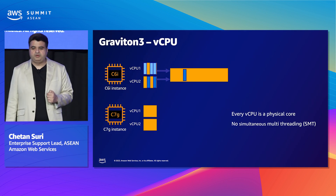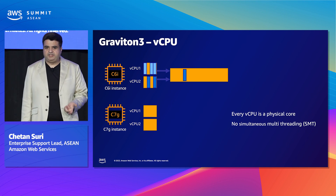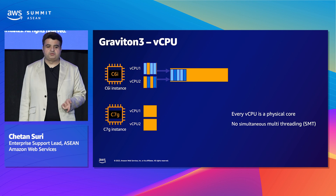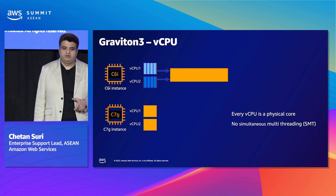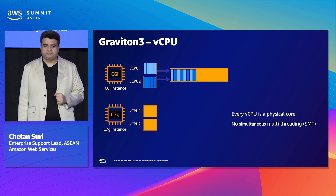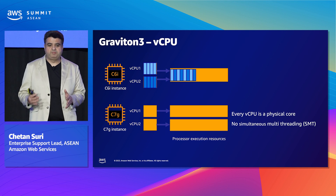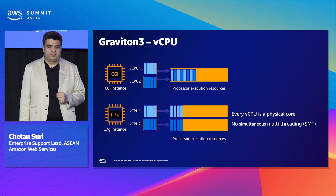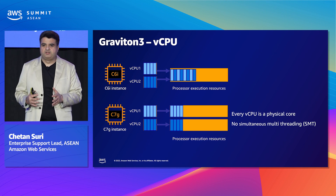Let's compare Graviton vCPUs to x86-based vCPUs. On x86-based instances such as C6i, vCPUs are hyper-threaded, meaning they share resources and have less isolation. In contrast, every vCPU on a Graviton processor is a physical core — no simultaneous multi-threading (SMT) and more isolation between vCPUs. The cores are connected by a mesh with 2 terabytes per second of bisectional bandwidth, so applications can move data more quickly from core to core. Additionally, large L1 and L2 caches per vCPU mean a large portion of your workload fits in cache without going to memory.